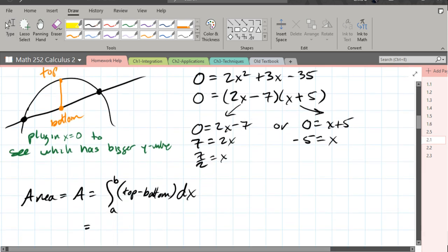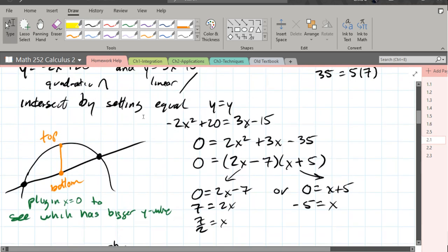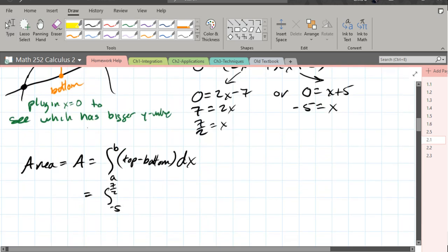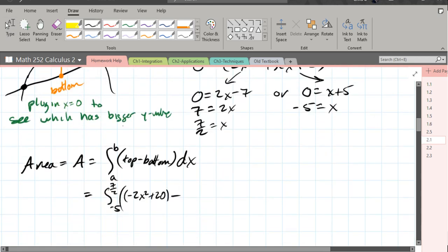Okay, so we're ready to plug all this in. So our small is negative 5. Our big is 7 halves. Our top, we said, was the quadratic, which is negative 2x squared plus 20. Minus the bottom, which was 3x minus 15.